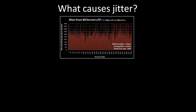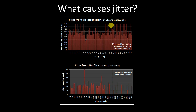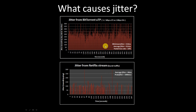BitTorrent isn't the only culprit. Streaming video applications like Netflix or YouTube that aggressively buffer ahead to avoid playback interruptions also tend to cause problems. In my measurements, this can average 44 milliseconds of jitter — small bumps — but occasionally it can also go above a thousand milliseconds. While that's not as bad as BitTorrent, it's still bad enough to cause major problems for voice-over-IP and gaming.